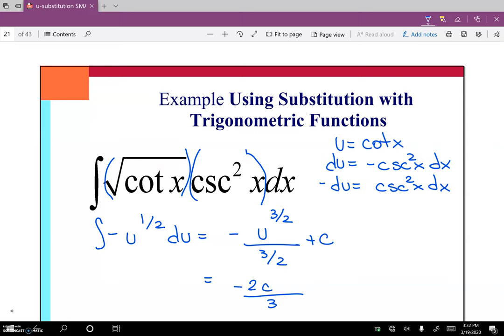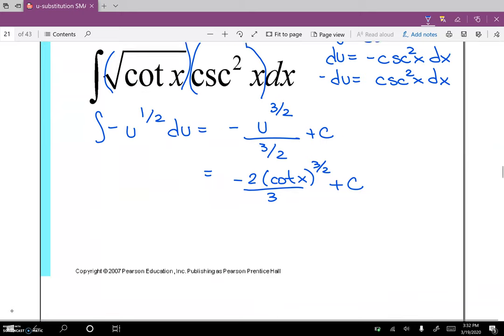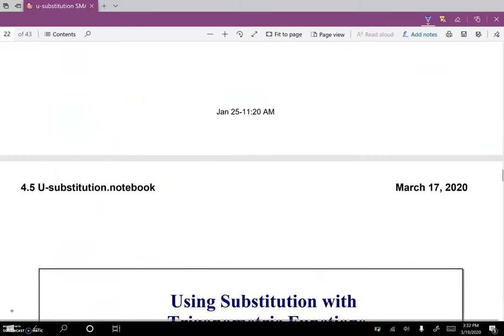which works out to be negative two-thirds cotangent of x to the three halves, plus c. Okay, there we go. Should have gotten it that time.